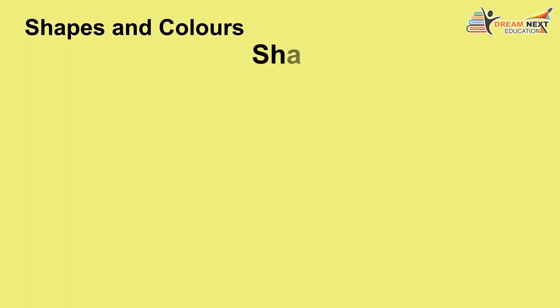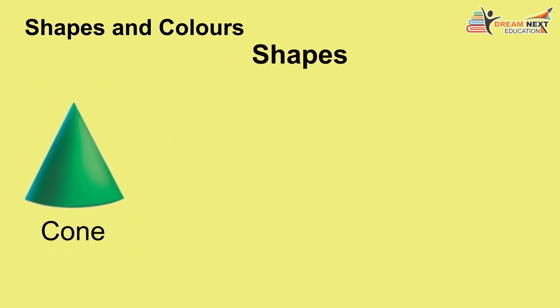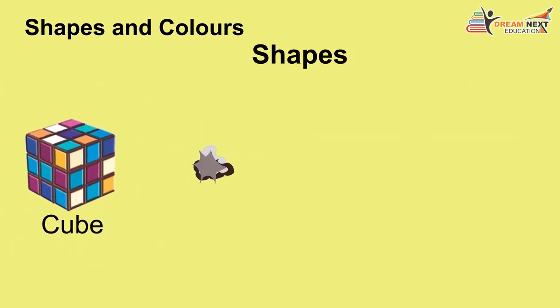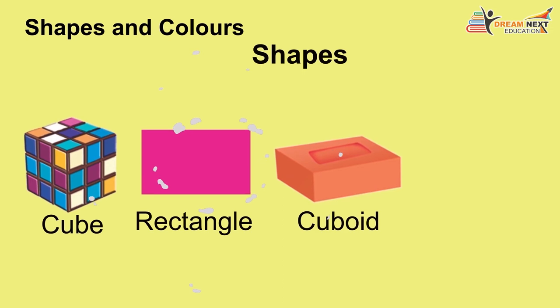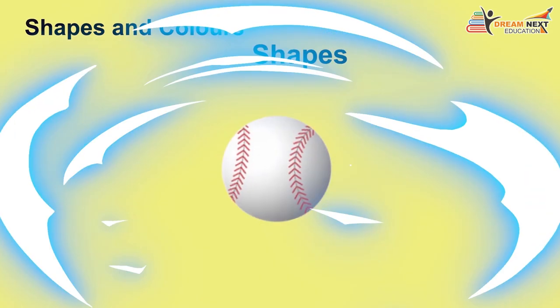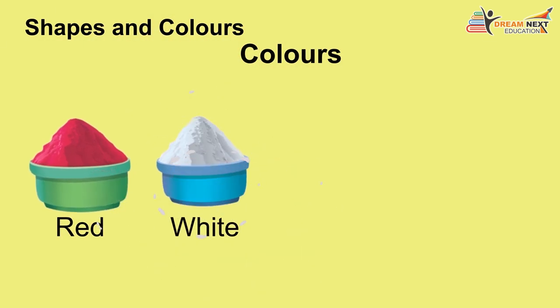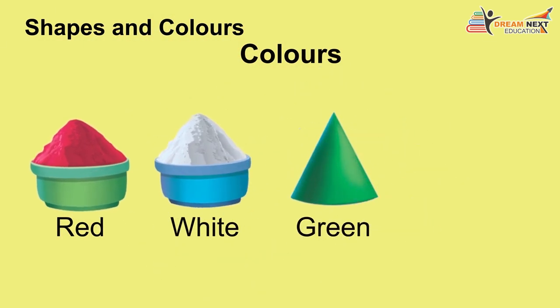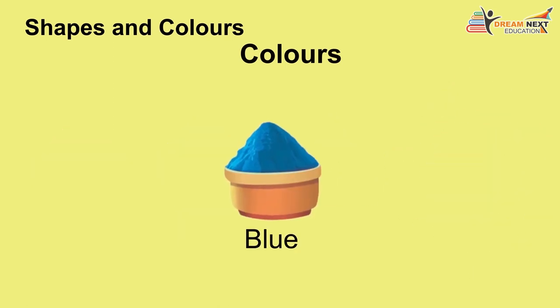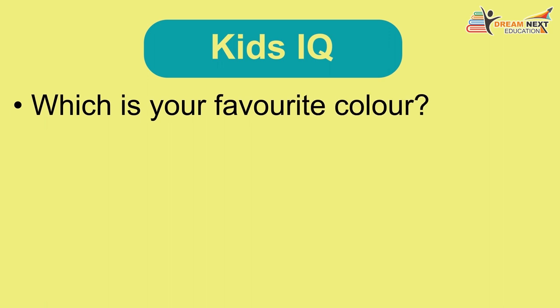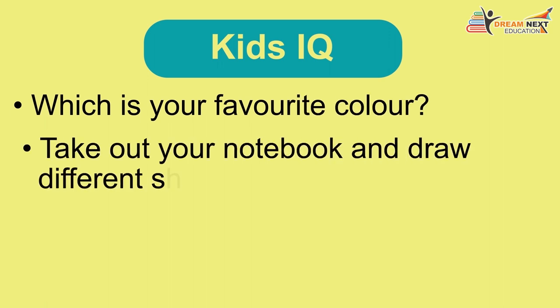Shapes and colors. Shapes: pyramid, square, circle, cube, rectangle, triangle. Colors: red, white, green, yellow, blue. Kids IQ: Which is your favorite color? Take out your notebook and draw different shapes.